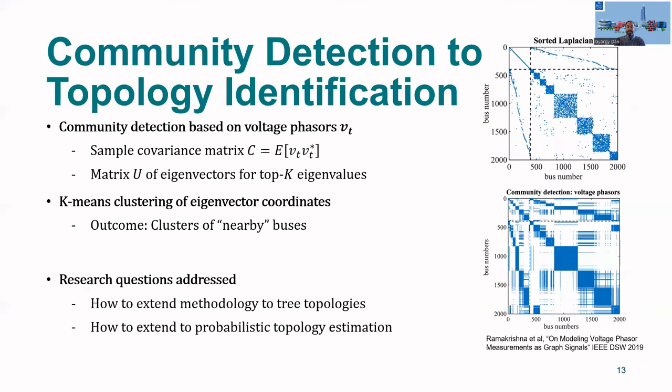For community detection, we use the voltage phasors to compute the sample covariance matrix. Then we take the sample covariance matrix, compute its eigenvectors, and take the top K eigenvalues and the corresponding eigenvectors to form a new matrix, on which we perform k-means clustering on the coordinates. This would provide us the clusters of nearby buses.